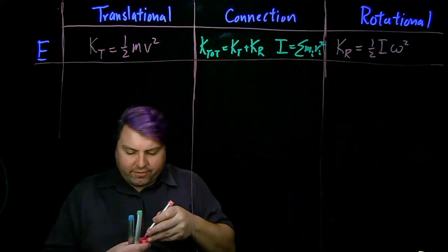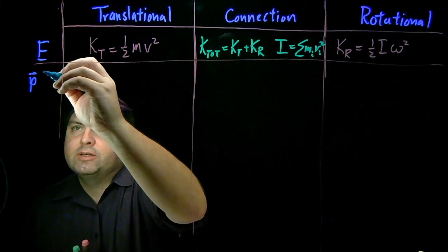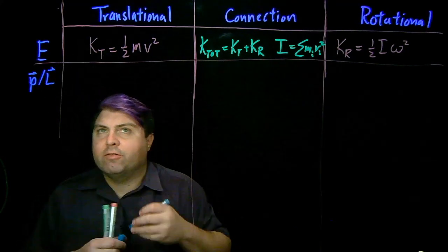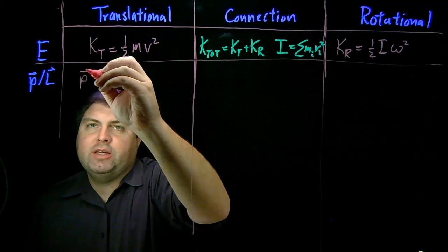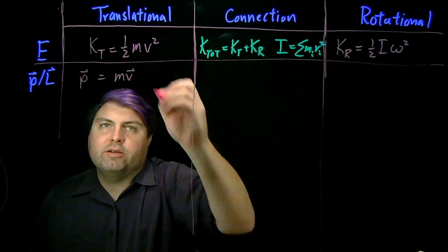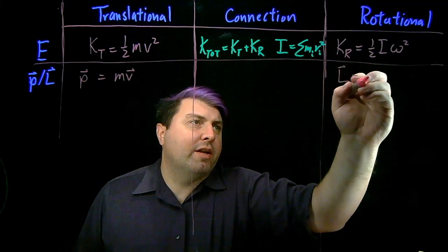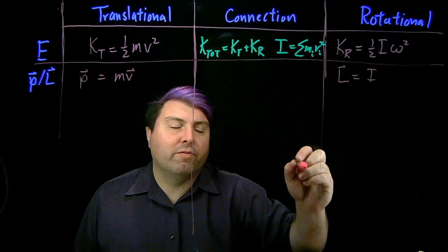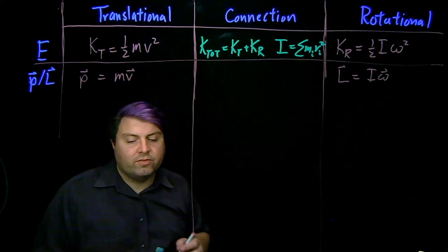We also have other connections with momentum, a momentum and angular momentum. So for our translational momentum, we have that our p is equal to mv. For rotational or angular momentum, we have that L is equal to rotational mass times rotational angular velocity.